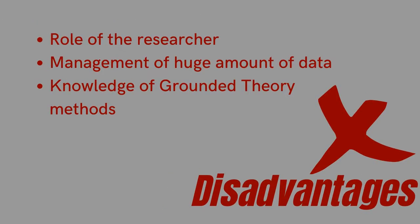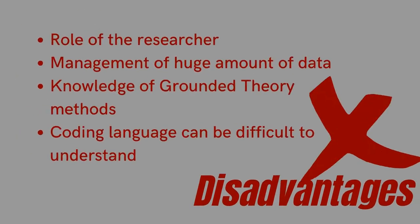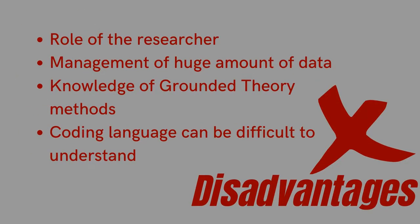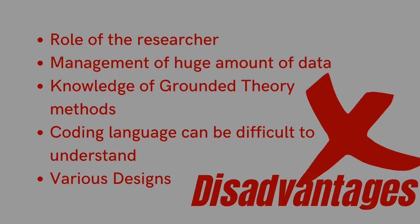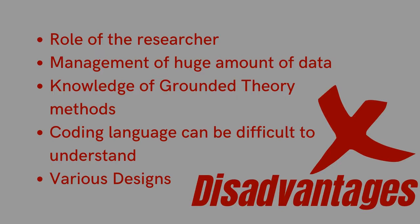The researcher needs to be skillful in grounded theory methods in order to maintain integrity of the research and control of the data. Many researchers complain about the coding language being difficult to understand and can come across to many as jargon. This may lead to many researchers getting frustrated or intimidated to use grounded theory. The development of different designs of the method, like systematic, emergent, and the more recent constructivist, can make it difficult for new researchers to keep track of the differences in the designs.